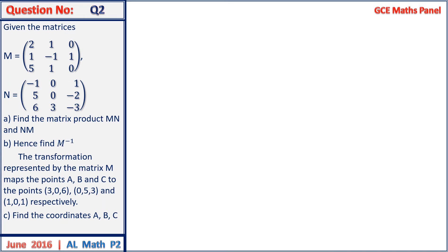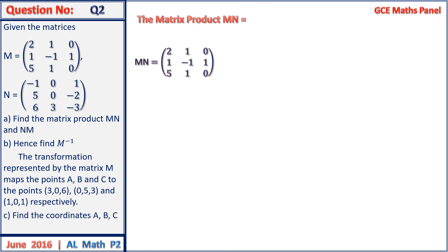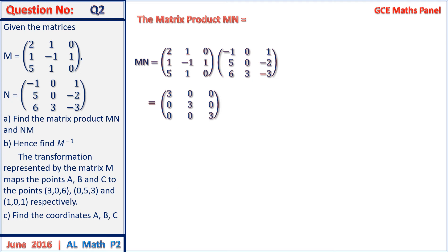For question 2, the matrix product MN is given by matrix M times matrix N. When we perform this operation, we obtain a 3 by 3 matrix with entries 3, 0, 0, 0, 3, 0, 0, 0, 3. This matrix is equal to 3 times the identity matrix.